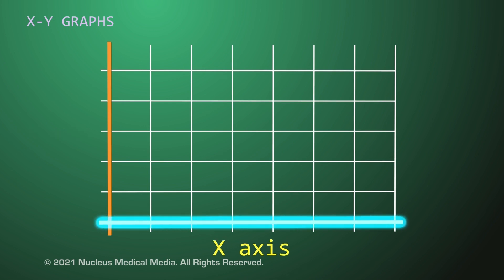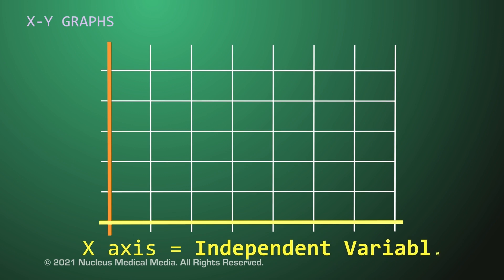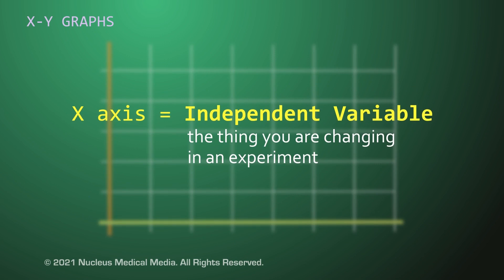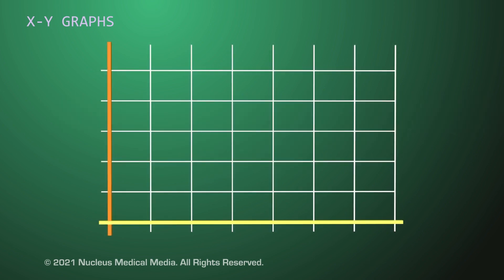The horizontal X axis shows data that represents the independent variable. Remember, the independent variable is the variable you are intentionally changing or testing in an experiment. For example, the independent variable might be how long a student studies.